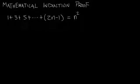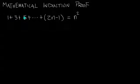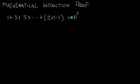Hey everybody, this is Paul. In this tutorial I'm going to be doing a proof by mathematical induction. I'm going to prove that 1 plus 3 plus 5, plus all the way up to some 2n minus 1 term, is all equal to whatever that n was, squared.